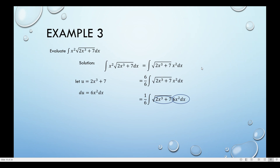Then in the same way as the previous examples, I replace the expression with u. So I have now the square root of u, and 6x squared dx is the du. So I have du here. This is just substitution — that's why it's known as integration by substitution.